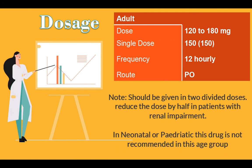Dosage. Adult dose: 120 to 180 mg. Single dose: 150 mg. Frequency: 12 hourly. Route: orally. Note: should be given in two divided doses. Reduce the dose by half in patients with renal impairment. In neonatal or pediatric patients, this drug is not recommended in this age group.